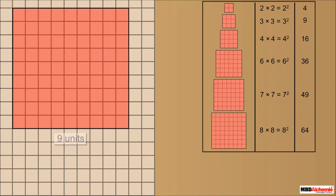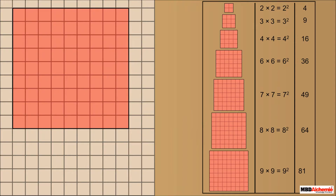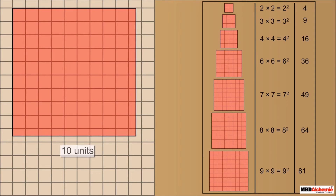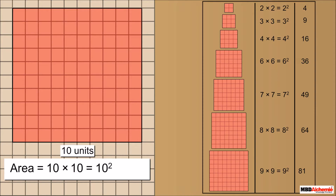Consider a square of side 9 units. It is further divided into 81 unit blocks. The area of this square is 9 into 9, which we write as 9 squared, which is equal to 81. Consider a square of side 10 units. It is further divided into 100 unit blocks. The area of this square is 10 into 10, which we write as 10 squared, which is equal to 100.